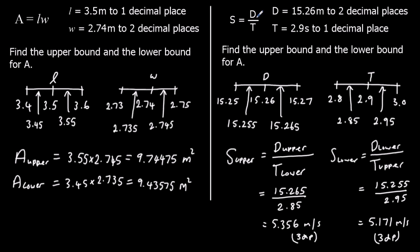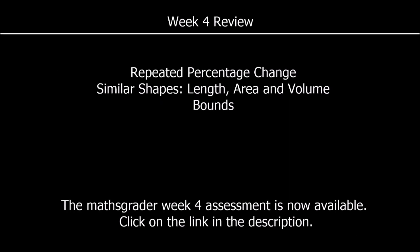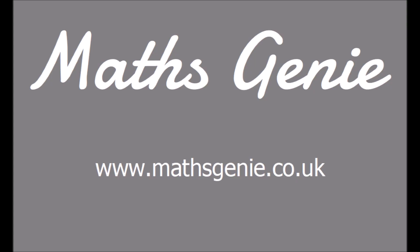Because the inputs — distance and time — have been rounded and have a range of values, the output, the speed, can take a range of values: between 5.171 and 5.356 m/s. So that was our week 4 review covering repeated percentage change, similar shapes, and bounds. There will be an assessment available now — the link will be in the description of this video or at the bottom of the page on the website.